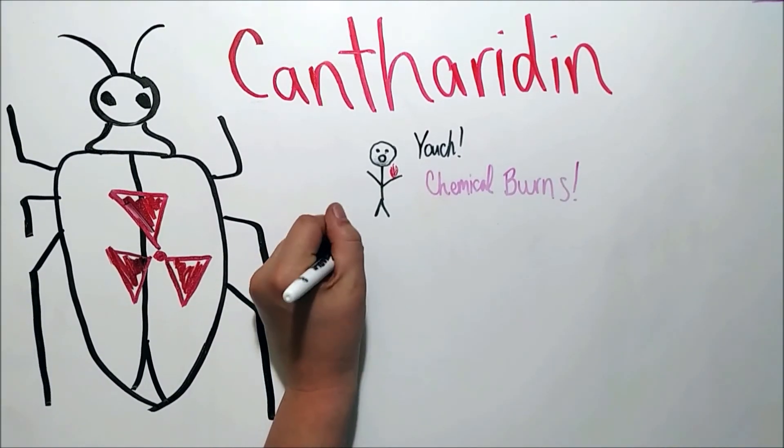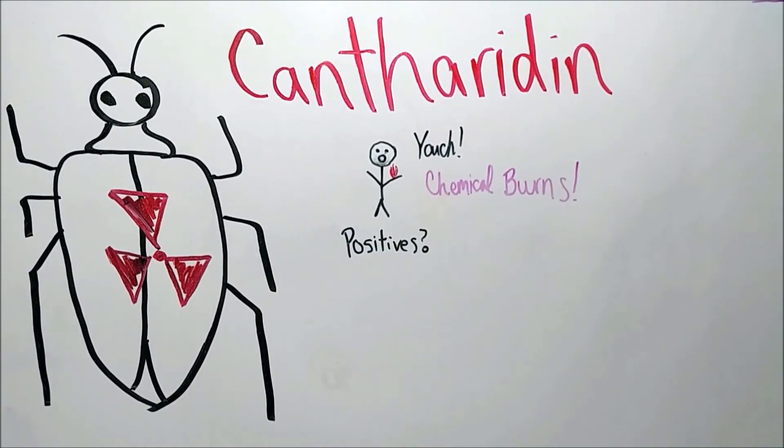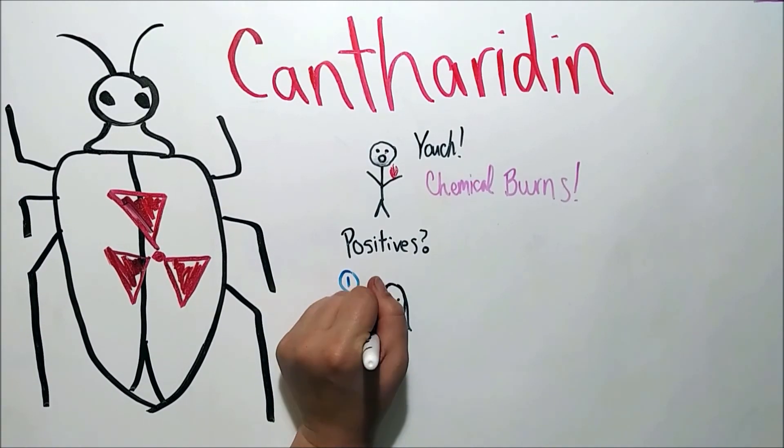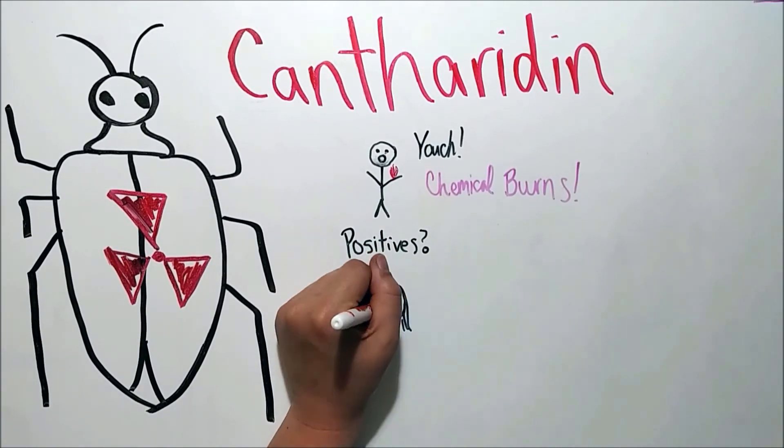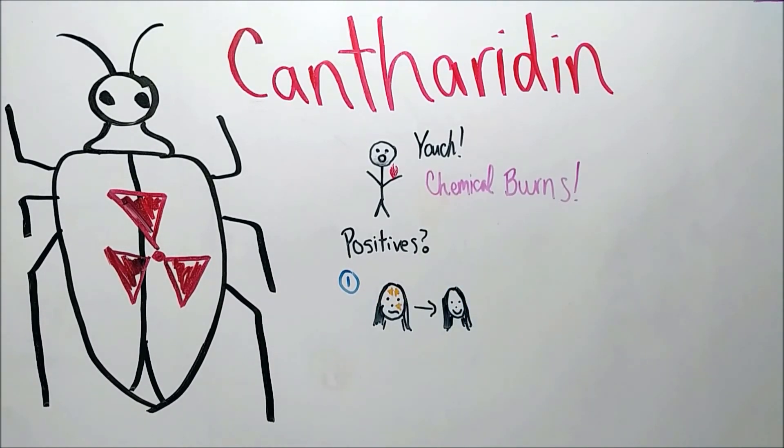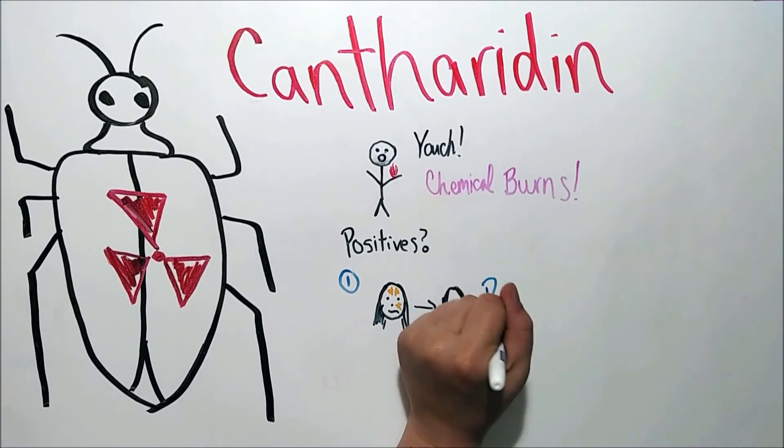But can we use this chemical to our advantage? Yes. In two ways. Firstly, do you remember that wild night that you and a friend got matching face tattoos? Yes. Cantharidin is a chemical that is used for removing tattoos. Although, you should definitely talk to a doctor before rubbing blister beetles on your face.